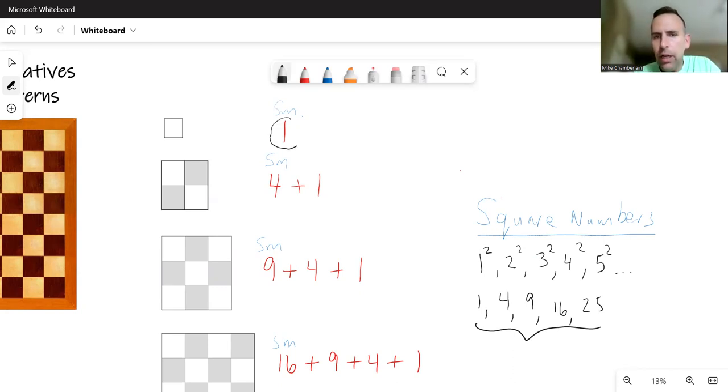For example, a student might notice that I had 1. And then when I went to 4, that was actually 3 more. I could add 3 to get there. And then I went to 9, and that's adding 5 more.